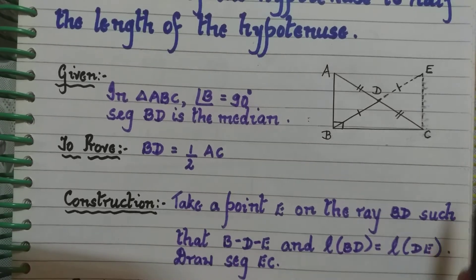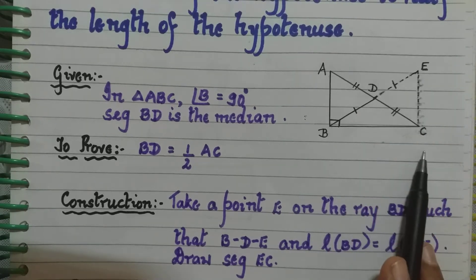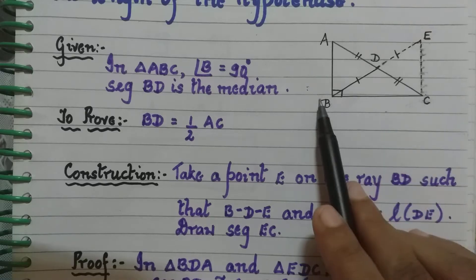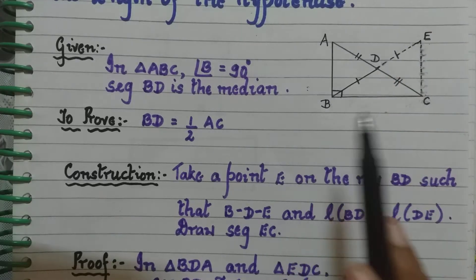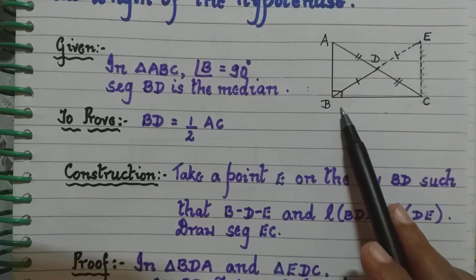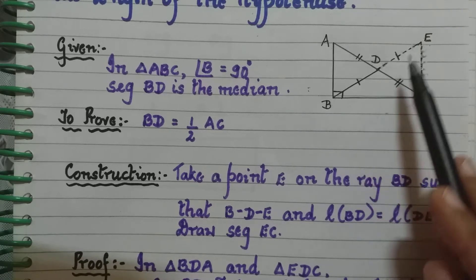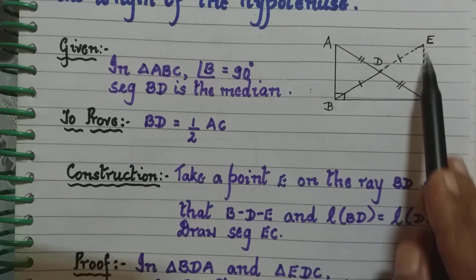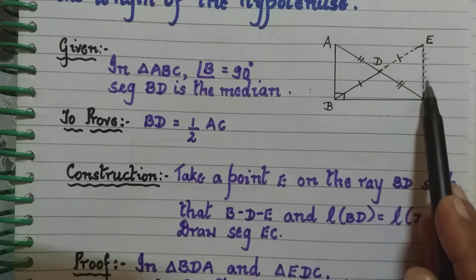You will see the construction represented with dotted lines — DE and EC. Take a point E on the ray BD such that D lies between B and E, and the length of BD equals the length of DE. So we are extending BD to a point E such that BD equals DE.